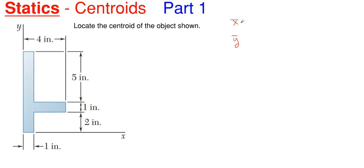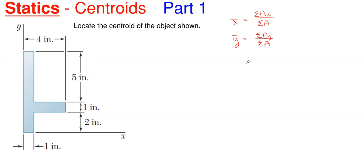What I'm going to show you is the most simplistic way of finding your centroids X and Y for a 2D situation. X-bar will be the summation of A times X divided by the summation of A, and Y-bar will be the summation of A times Y divided by that same summation of A.